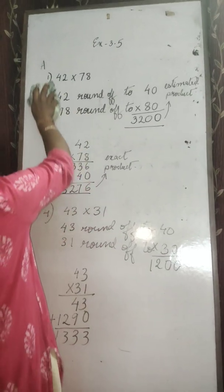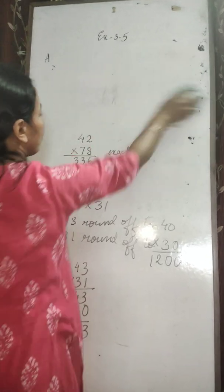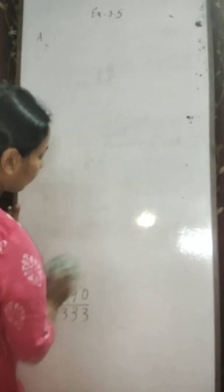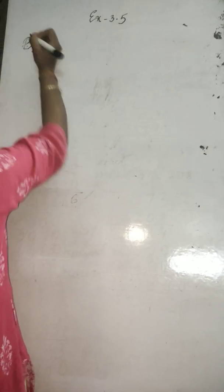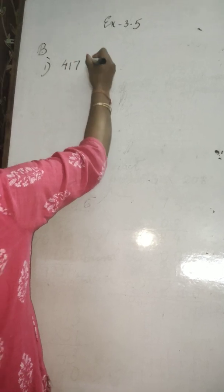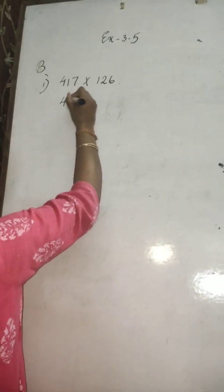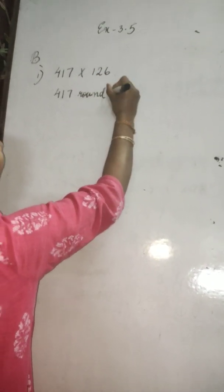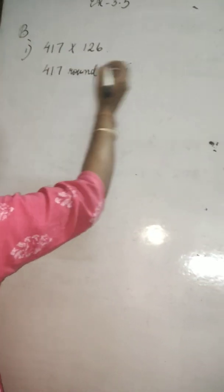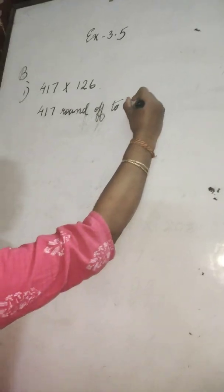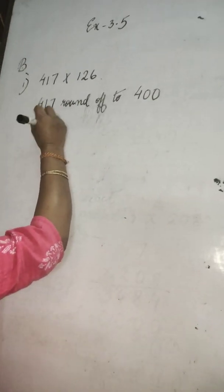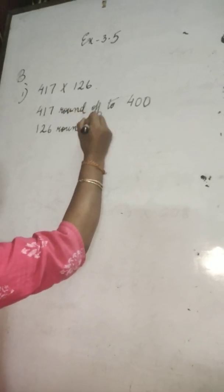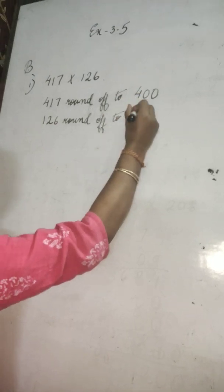Now I will show you how to round off to the nearest hundred and find the estimated product. That is exercise B: 417 into 126. First, round off to the nearest hundred. 417 is between 400 and 500, it is closer to 400 — write 400. 126 is between 100 and 200, closer to 100 — round off to 100.